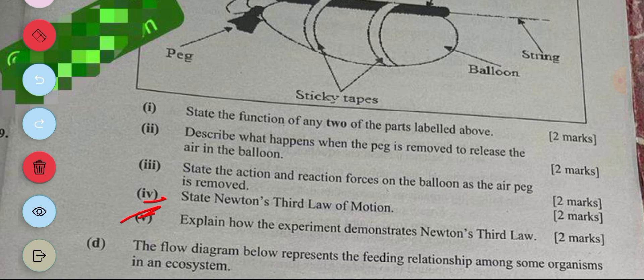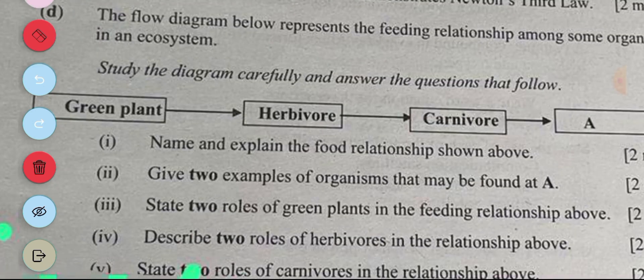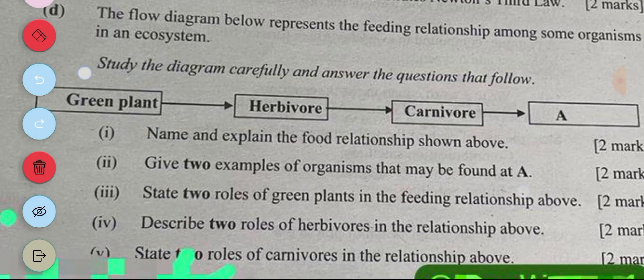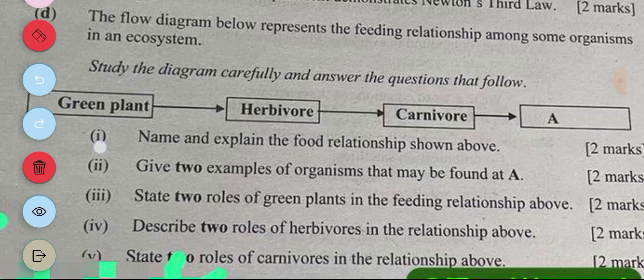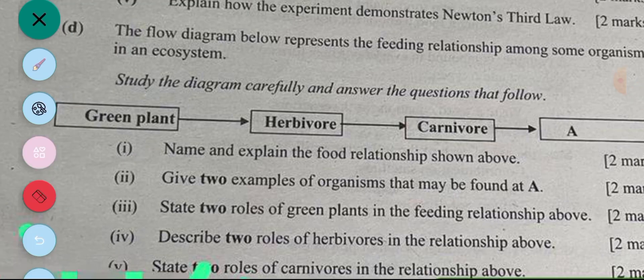Flow diagram below represents feeding relationship among some organisms in an ecosystem. So we have studied the diagram below and answer the questions that follow. Green plant, herbivore, carnivore. i, name and explain the food relationship shown above. The relationship shown above is a food chain. And to explain, it's a type of linear relationship where the herbivore feeds on a green plant and the carnivore feeds on the herbivore.